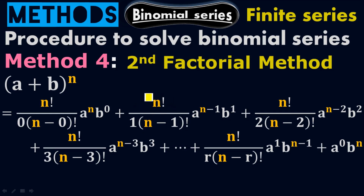So the difference between method 3 and method 4 is only the expression of the coefficients. You will get the same value of the coefficient — it is just a different way of writing the expression for the coefficient. Nothing more than this.